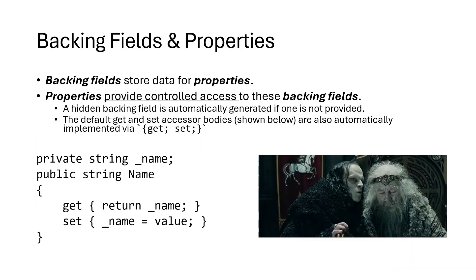Returning to our slides, hopefully this now starts to make a little more sense. The backing field, or underscore name, is holding the actual data. The property controls how we look at that data — when I get the value using this property it returns whatever the backing field contains, and when I change the value using the property it changes the value of the backing field.